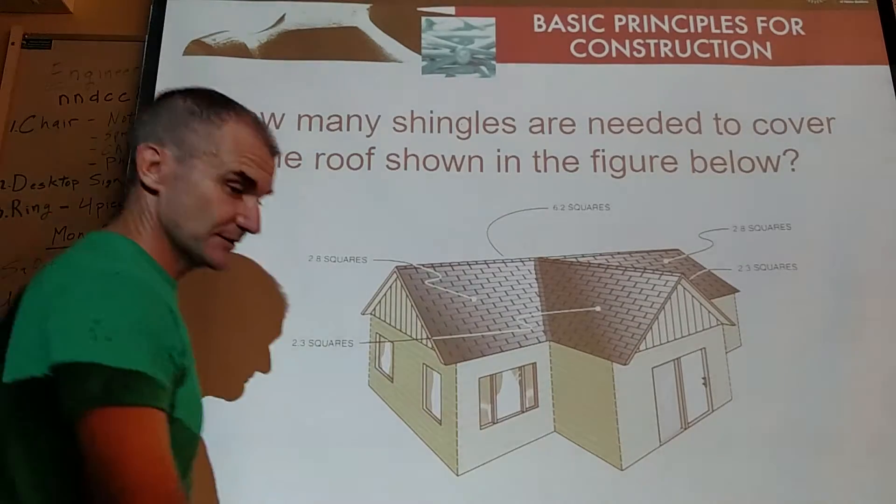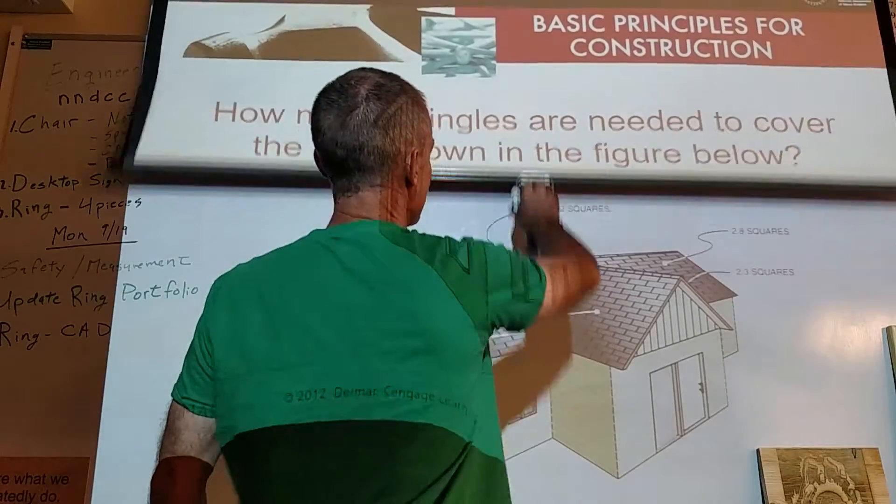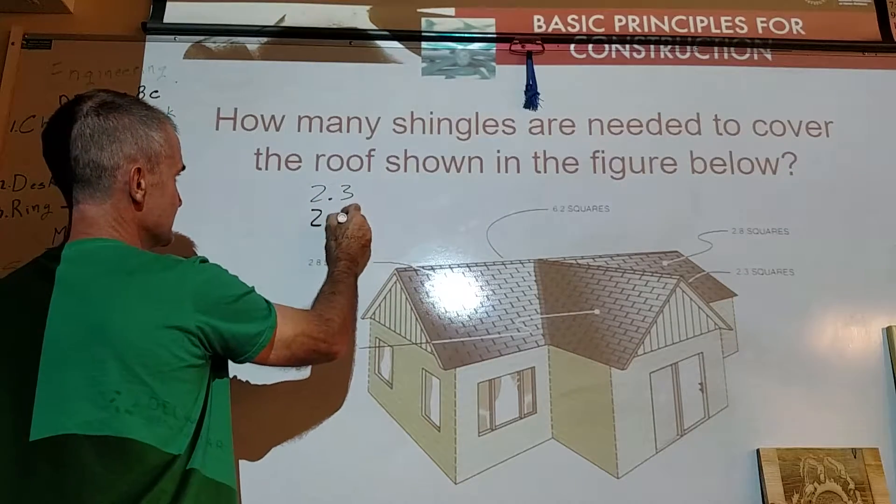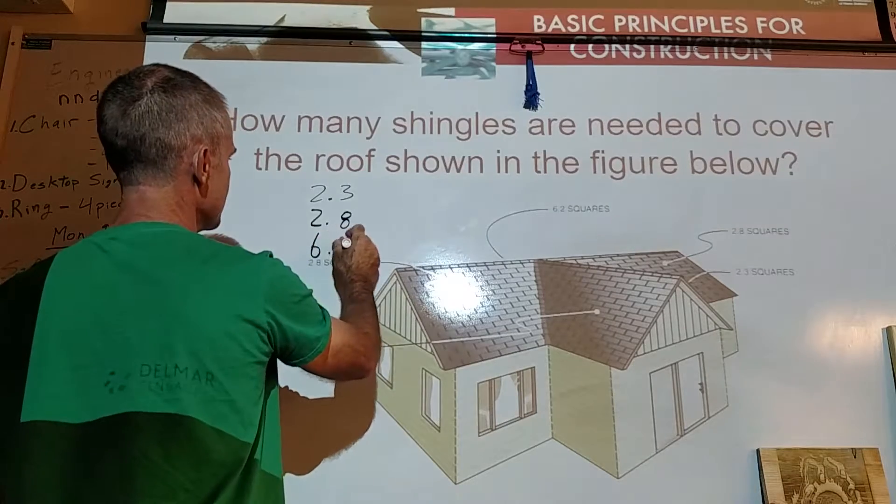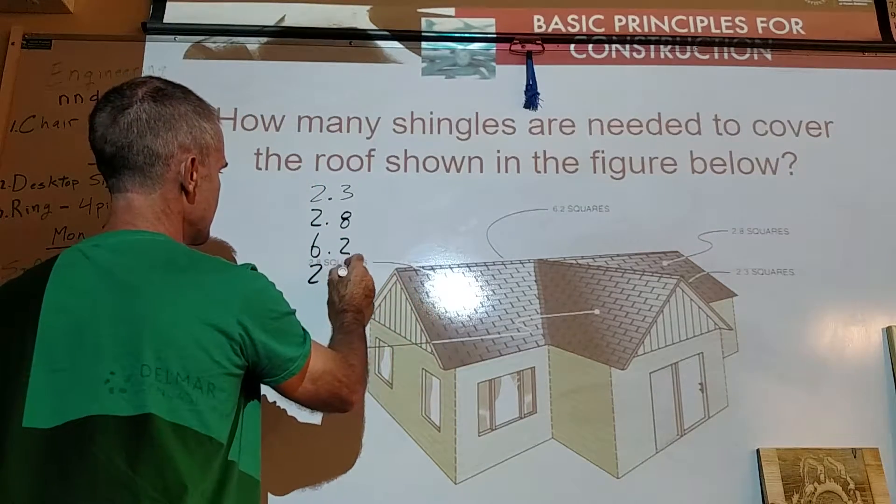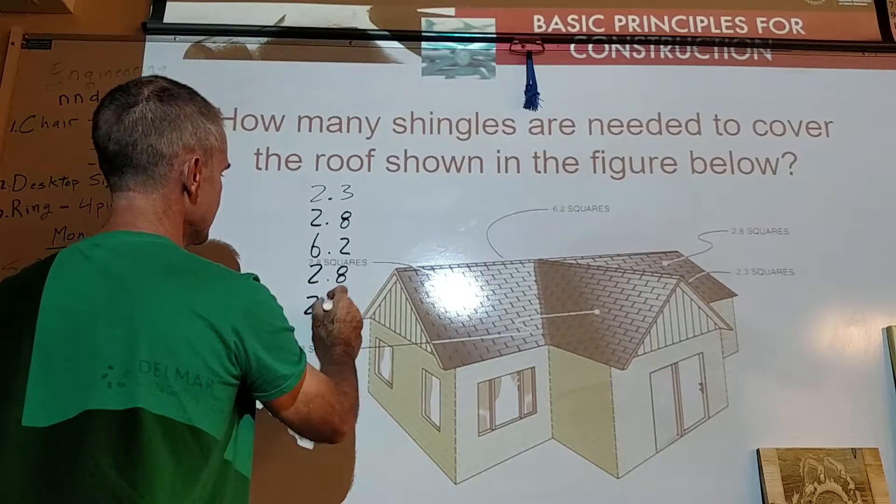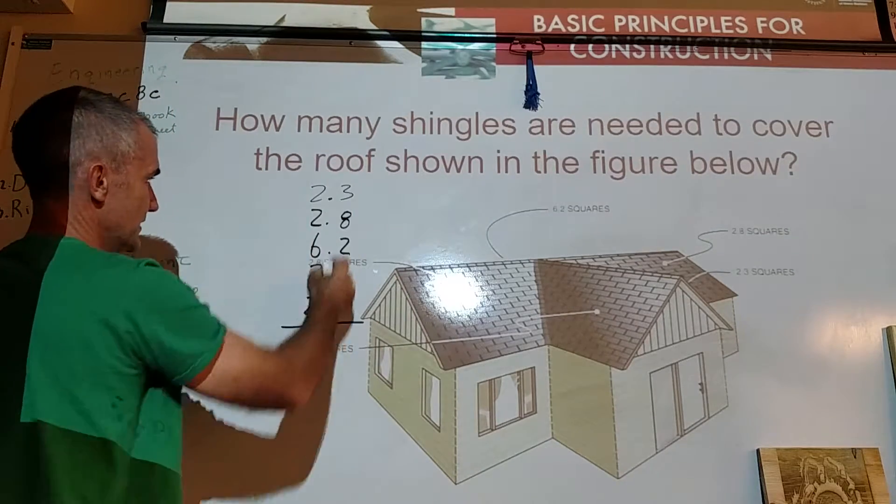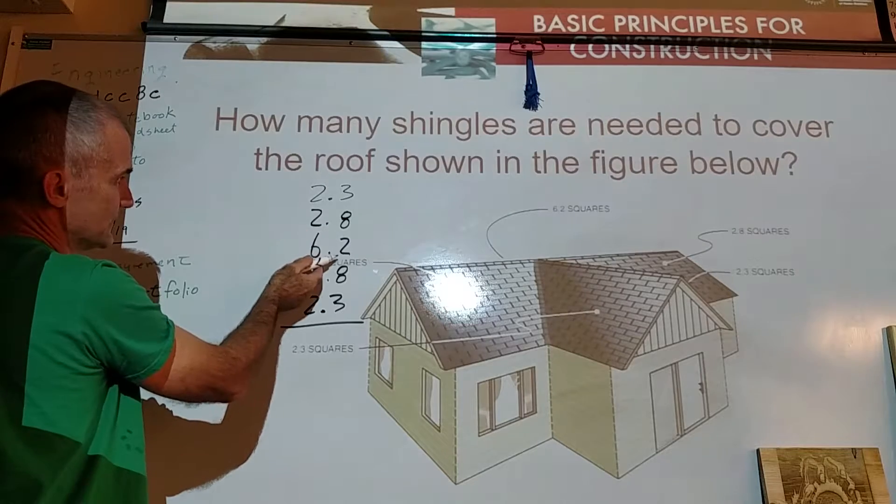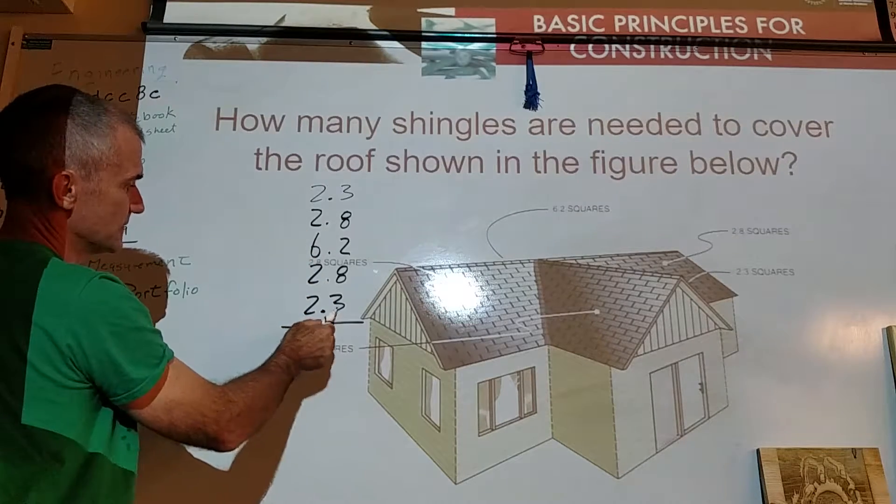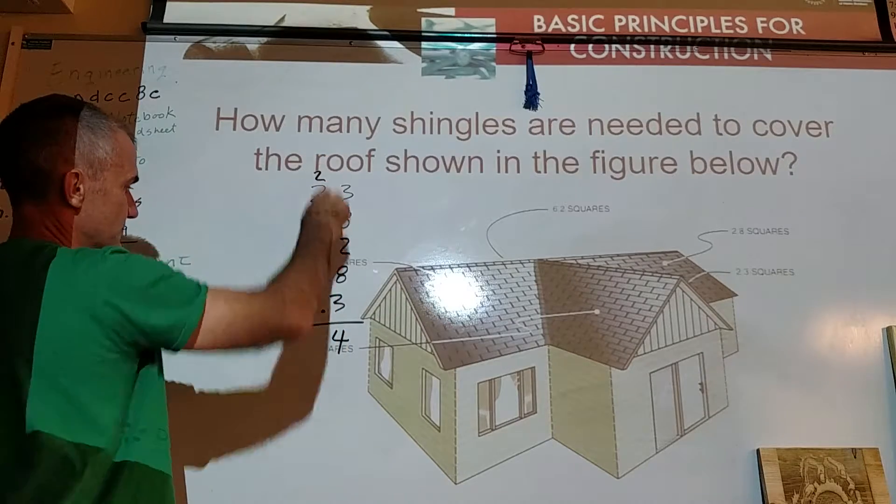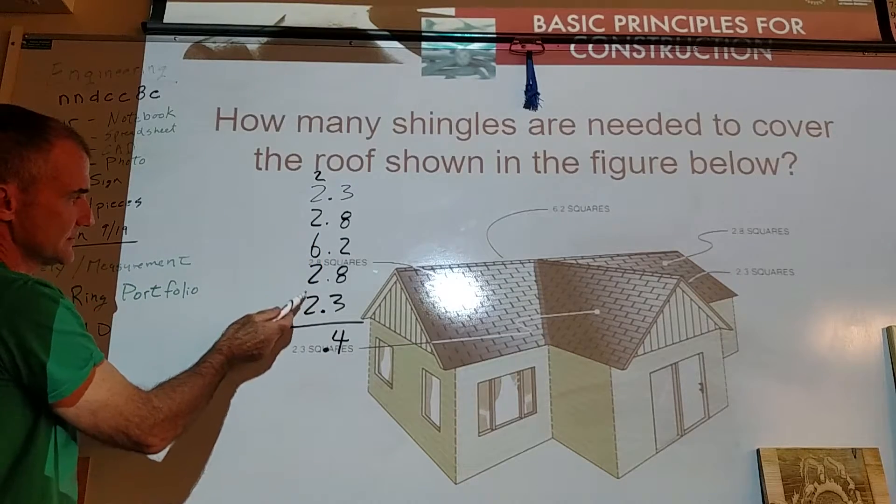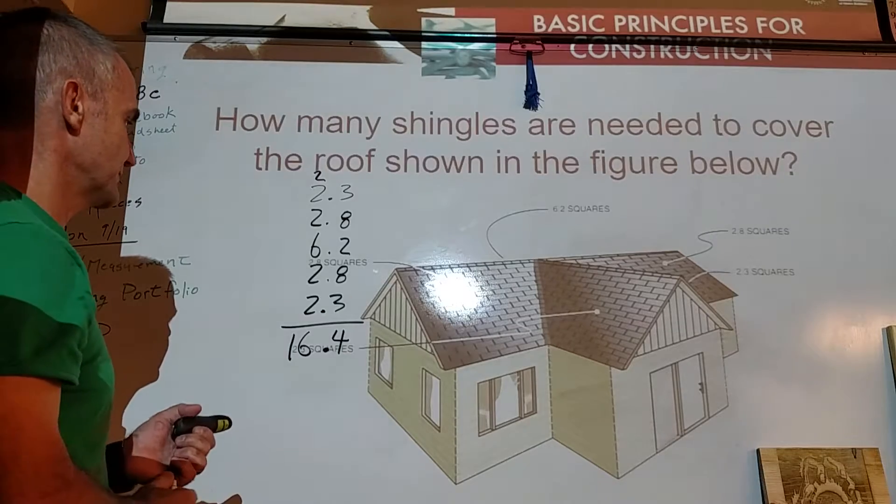Here's an example. If I'm building a house and I have 2.3 squares, 2.8 squares, 6.2 squares, 2.8, and 2.3, I should have them all down. I'm going to add those up. Decimal points are all lined up. I have 3 and 8, 11, and 2, 13, 21, 24. Carry the 2. The decimal place stays here. 2, 4, 6, 12, 14, 16. So I need 16.4 squares to roof this house.